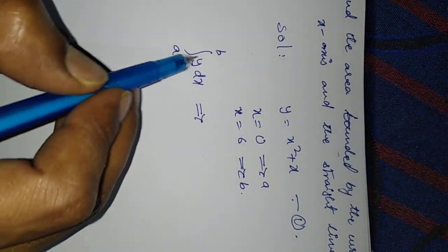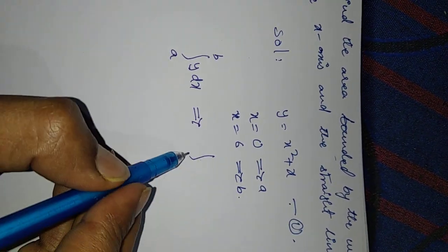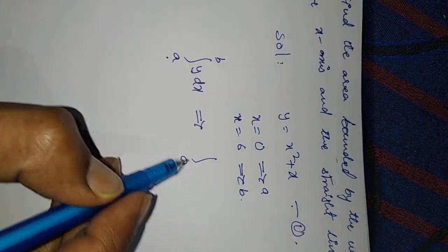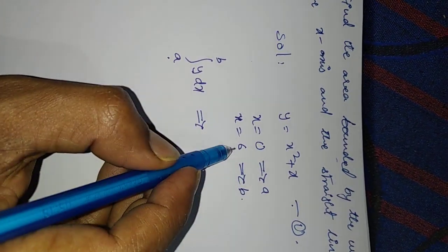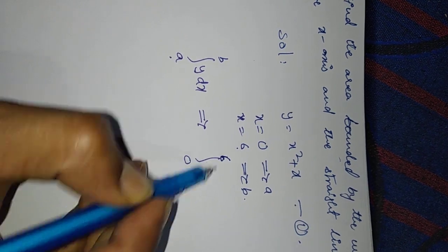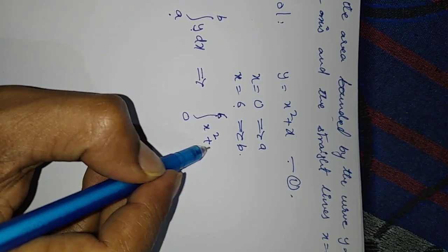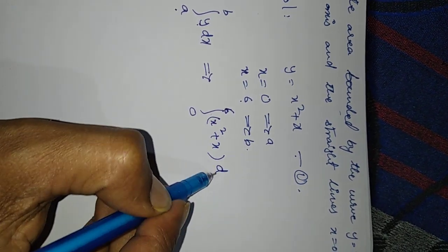That equals the integration where a means 0, b means 6, so integration from 0 to 6 of y, which is x squared plus x, dx.